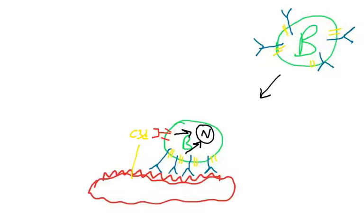The second signal, which we covered previously, was engagement of the B-cell coreceptor, which is binding complement on the surface of the pathogen.